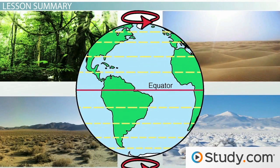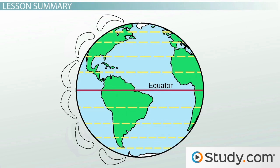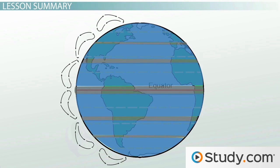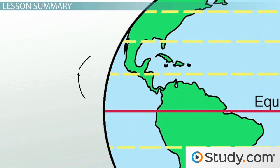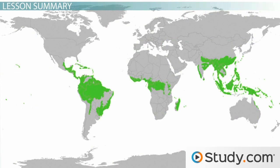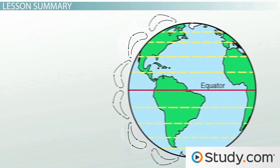To recap: Earth spins on its axis, which creates interesting wind patterns. Among these are global air circulation cells — three in the northern hemisphere and three in the southern hemisphere — that help distribute heat and air across Earth. Where cells meet are thin, windless girdles. Warm air rises vertically along the equator, creating an area of low pressure called the doldrums. As that rising air cools, it rains moisture back down, which is why we find tropical rainforests in this area. The air then travels horizontally, creating the first cell, the Hadley cell.